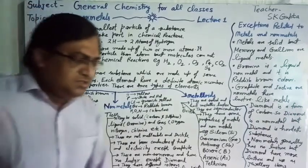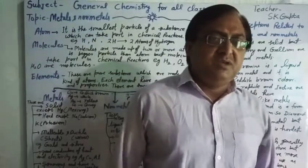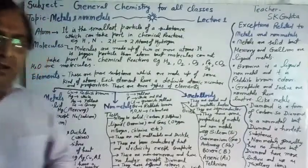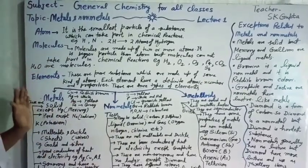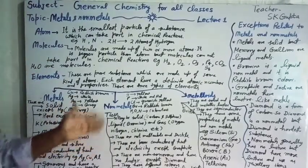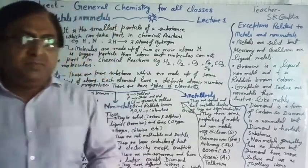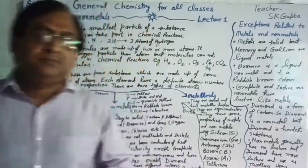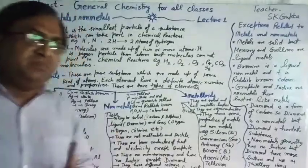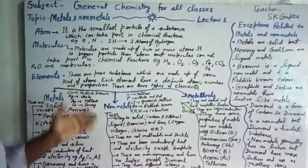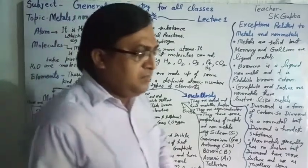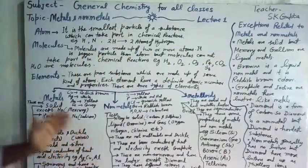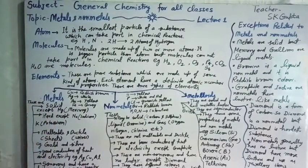Elements are pure substances which are made up of the same type of atoms — the same kind of atoms. There are many elements, and elements are present in metallic form and non-metallic form. Some elements are metals — mostly elements are metals — and some elements are non-metals, and a few elements are metalloids. Metals are solid, hard, malleable, and ductile.